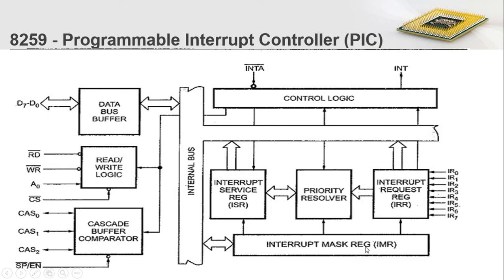There is also an interrupt mask register, IMR. While extracting the interrupt request with maximum priority, its information is loaded into the interrupt service register, and the remaining incoming interrupt requests with lesser priority are masked. The masked interrupt request information is stored in the interrupt mask register. Whenever a higher priority interrupt request arises in the 8259 IC, the control logic generates an interrupt request to the processor, and the processor generates an acknowledgement back when it is ready to accept the request, after which the data transfer and interrupt handling cycle takes place.